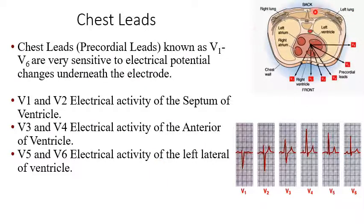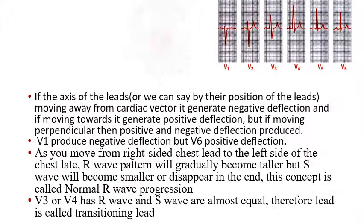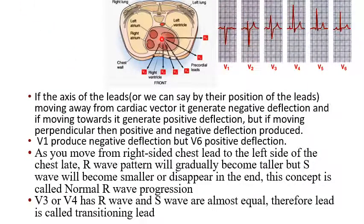The anatomic placement of chest leads: V1 in the fourth intercostal space, V2 parallel to V1, V4 in the midclavicular line, V3 between V2 and V4, V6 in the mid-axillary line, and V5 between V4 and V6. All of V3 through V6 are in the fifth intercostal space. In the horizontal plane, the cardiac vector is moving to the left and anteriorly.